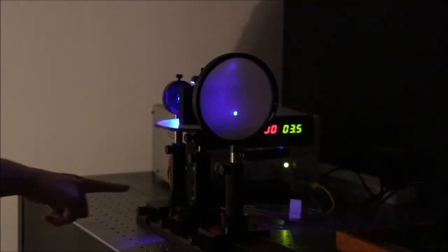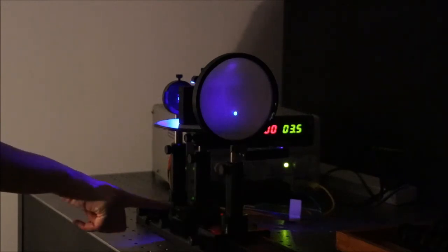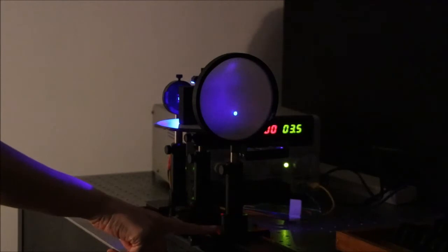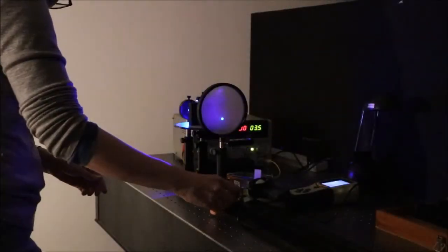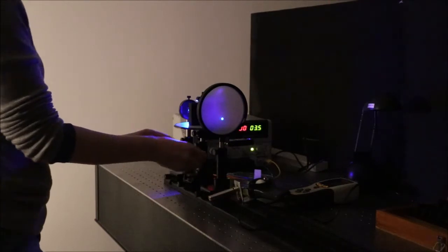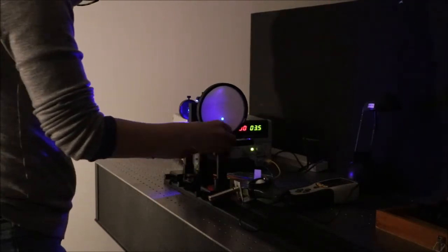Measure the distance from the object to the lens and from the lens to the image. Note the uncertainties. Replace the ground glass screen with a light meter.